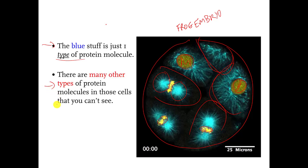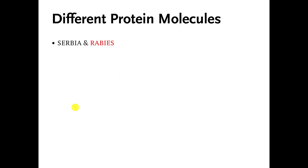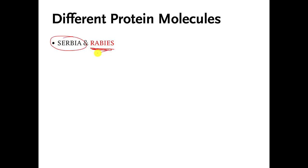There are many other types of protein molecules in those cells doing other jobs that you just can't see. This is the last slide in this video. This is a silly mind game, but here are two words you may have heard of: rabies — a disease you can get from certain animals, not the greatest disease to get — and Serbia, which is a country in Eastern Europe. The point is that they are made of the same letters, but they mean different things because the letters are arranged in different ways.